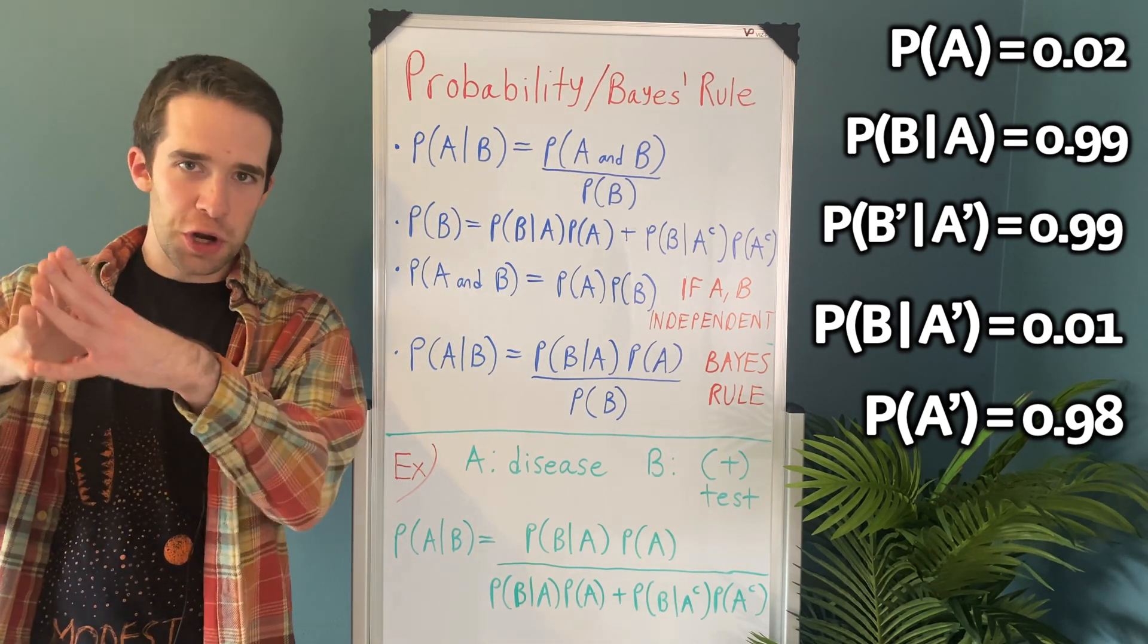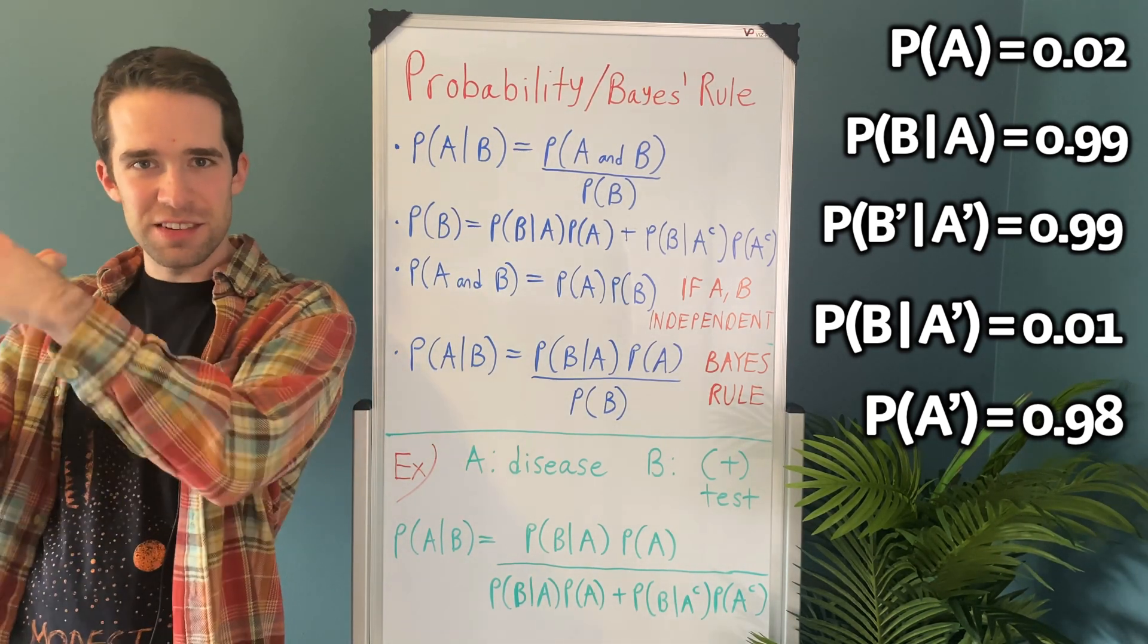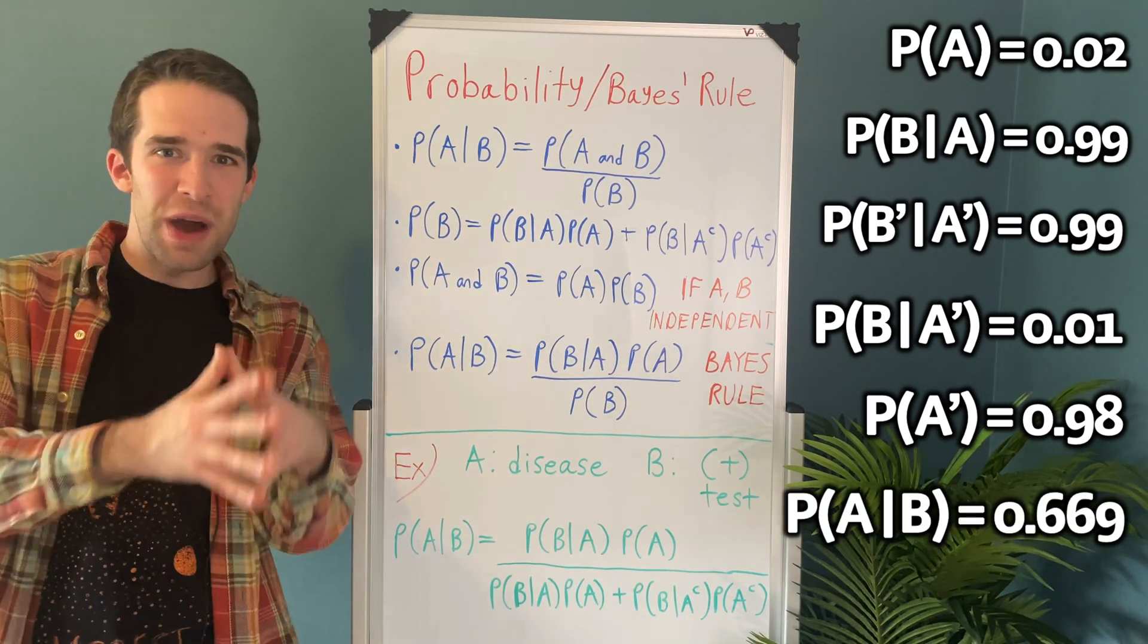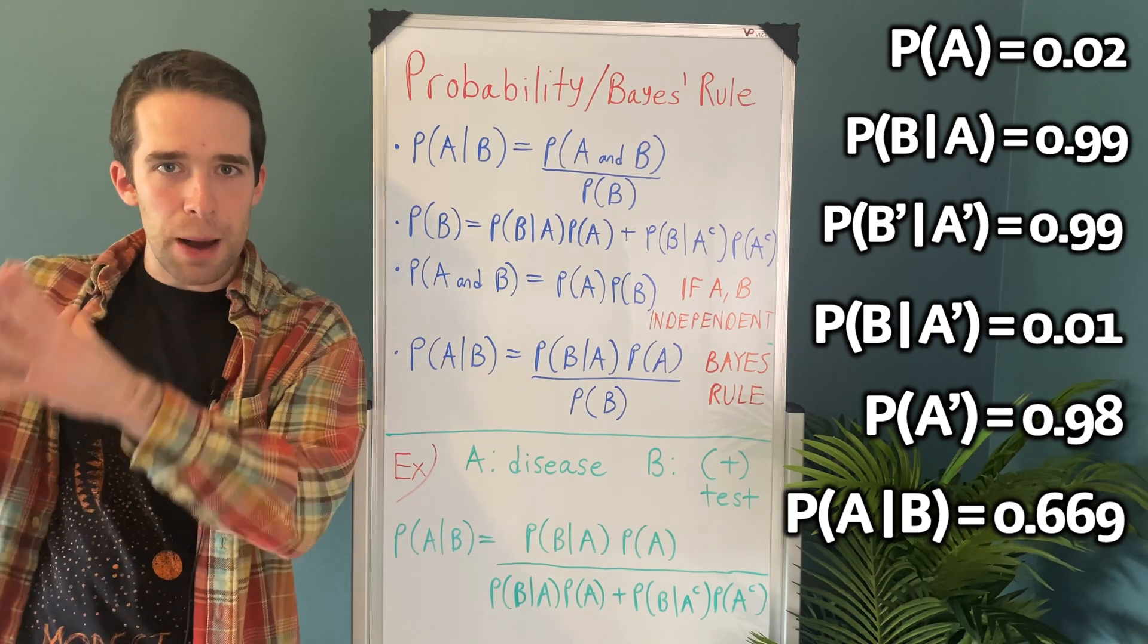Once you do all the math, you're going to come up with 0.669. So there's only a 66.9% chance that you have the disease if you get a positive test.